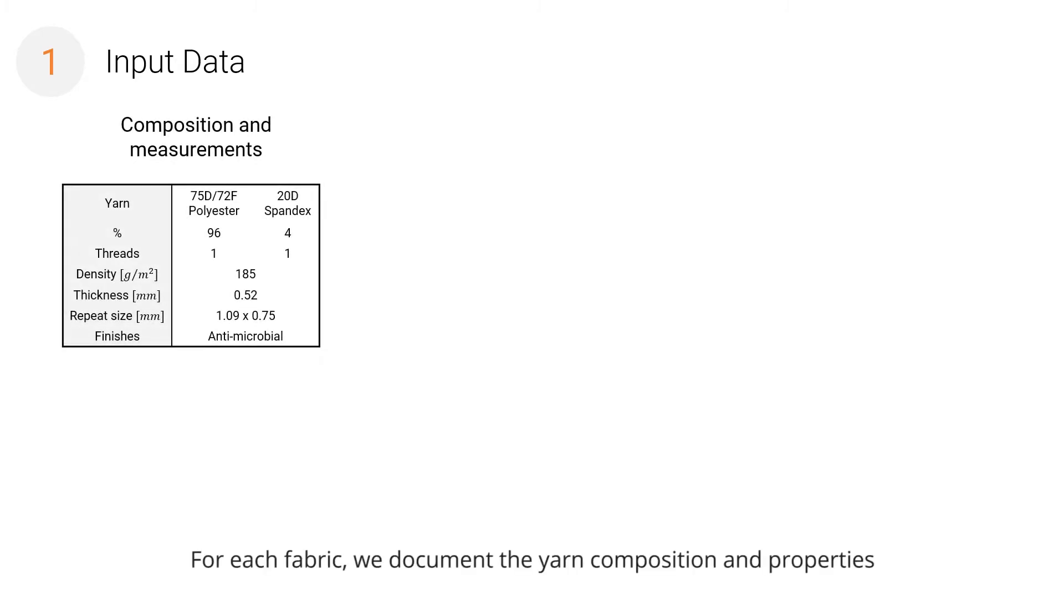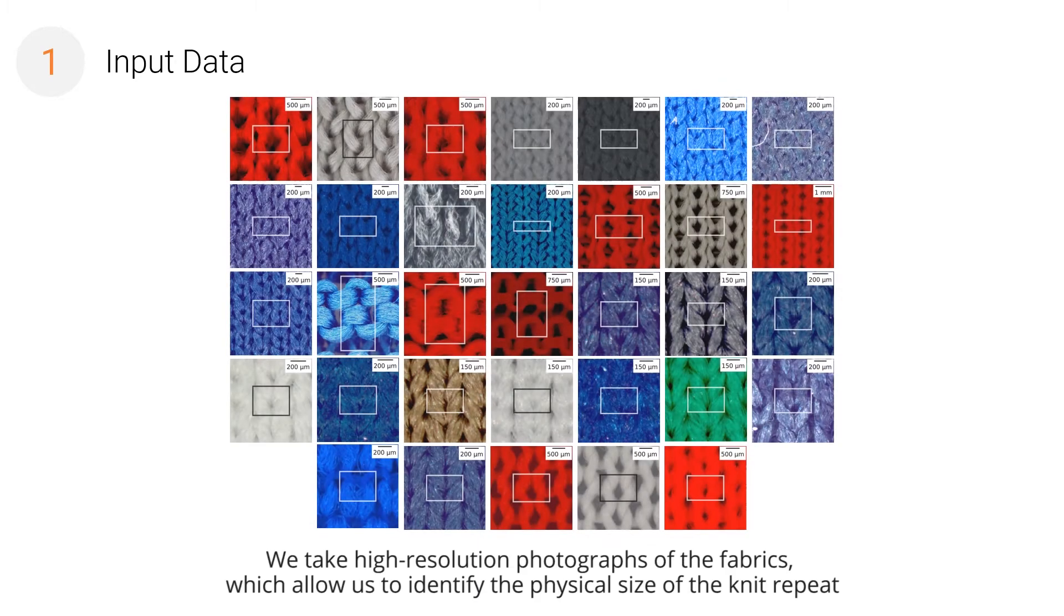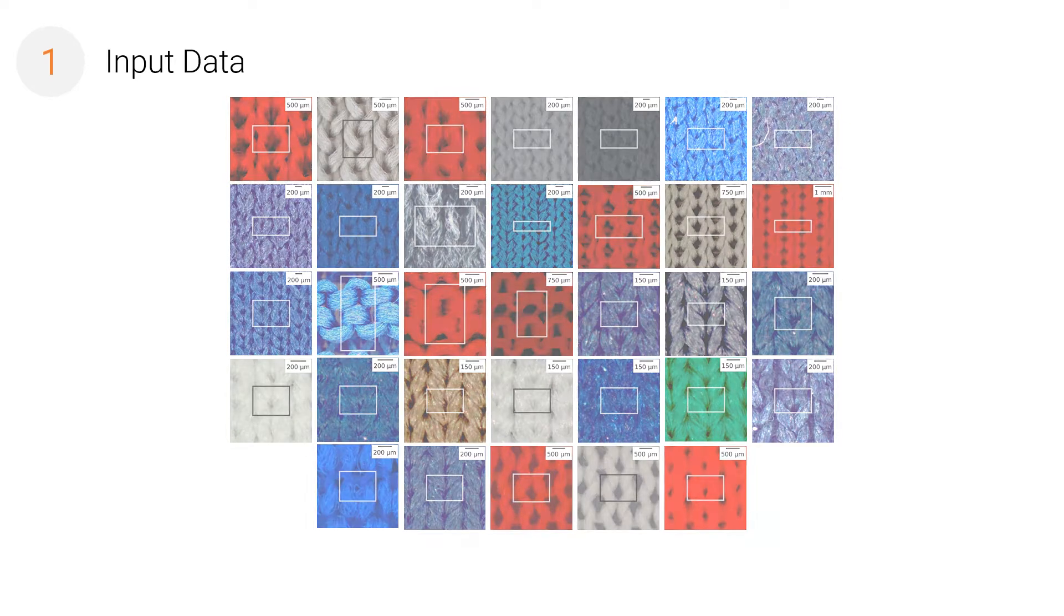For each fabric, we document the yarn composition and properties, as well as the knit construction together with its schematic representation. We take high-resolution photographs of the fabrics, which allow us to identify the physical size of the knit repeat.